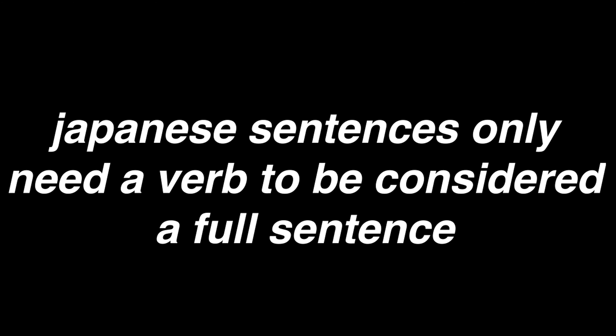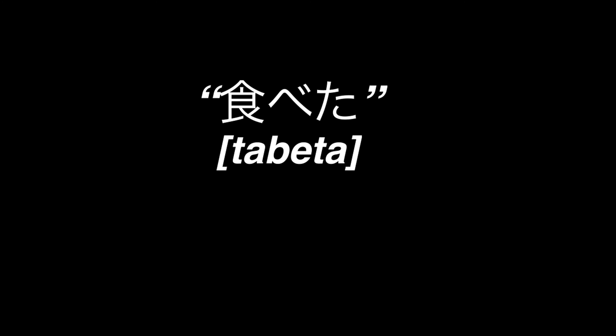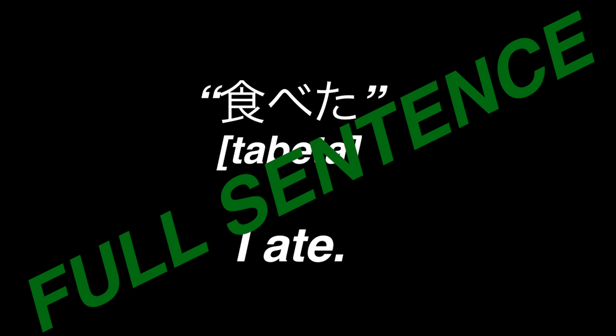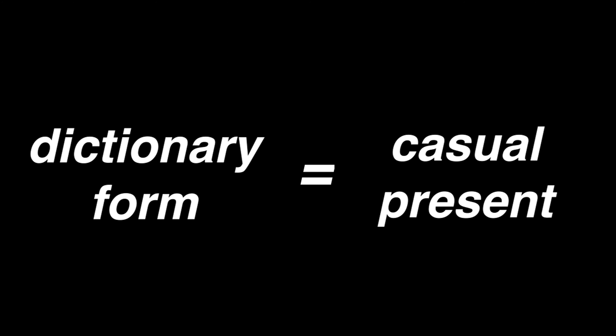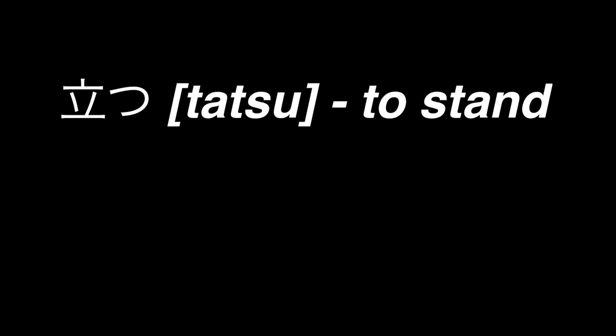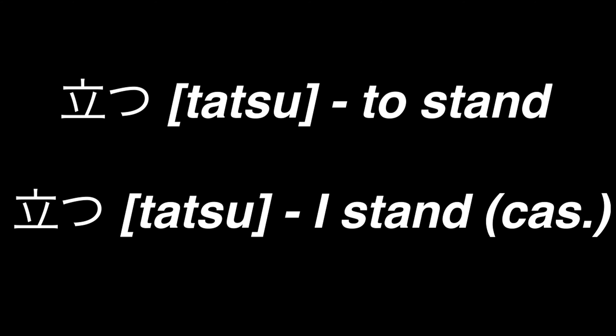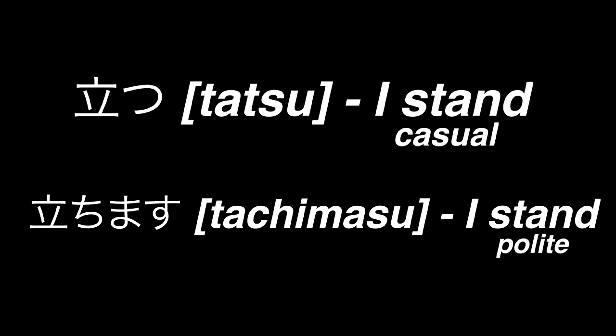Verbs always come at the end of the sentence, and Japanese sentences only require the verb to make a full sentence. For example, just saying tabeta means I ate and is considered a full sentence. Verbs are also conjugated for politeness. A verb in its dictionary form can be used as the casual present form, so something like tatsu, meaning to stand, can also mean I stand in casual speech. But to make it more polite, you can say tachimasu.